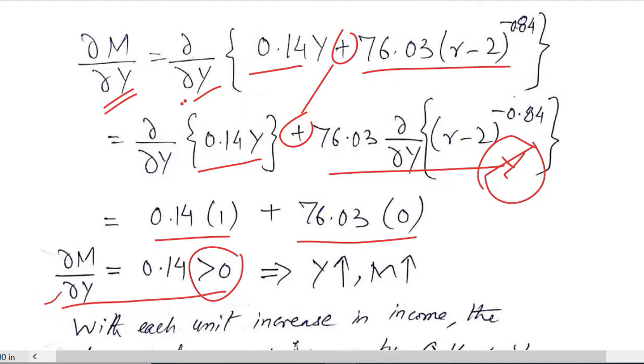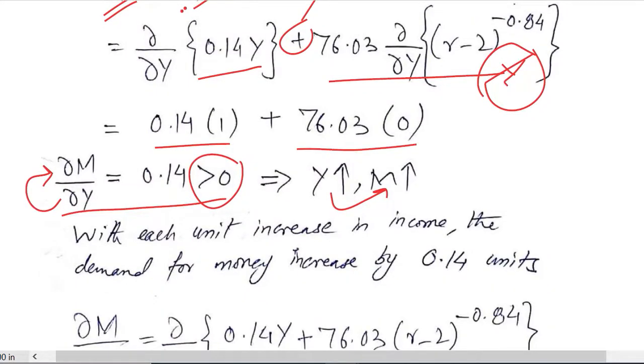It shows that the effect of Y on M, that is the effect of income on demand for money, is positive. This is something we can observe in our daily life that when income increases, the demand for money also increases.